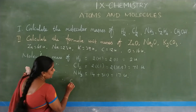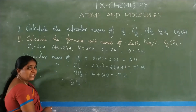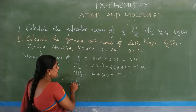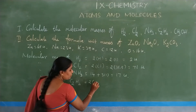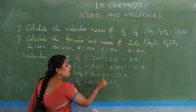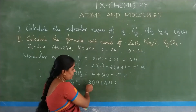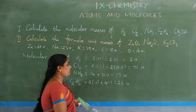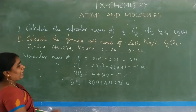Next, molecular mass of C2H4 (ethene). There are 2 carbon atoms: 2 × 12 = 24. And 4 hydrogen atoms: 4 × 1 = 4. So total = 24 + 4 = 28 unified mass.